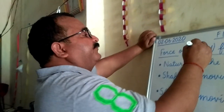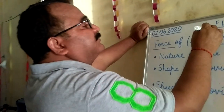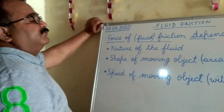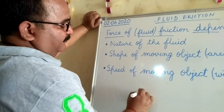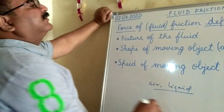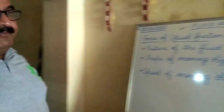Good morning students. In today's class we explain fluid friction. The term fluid means a substance that can flow from a higher level to a lower level. That type of substance is called fluid — like air or any type of liquid. When we move against the blowing of air, we feel friction, because air exerts force on us against our motion.